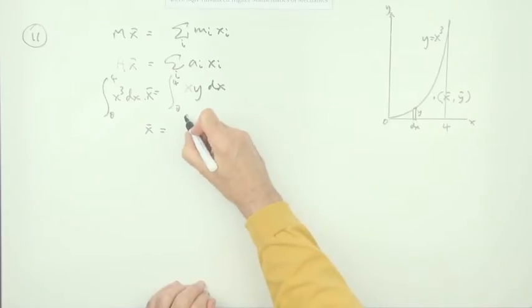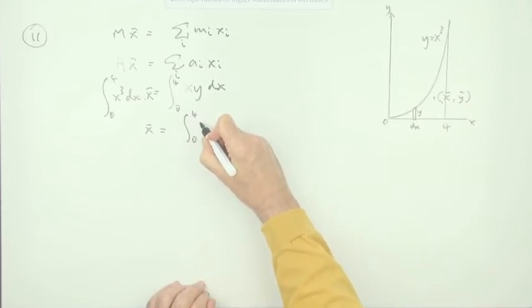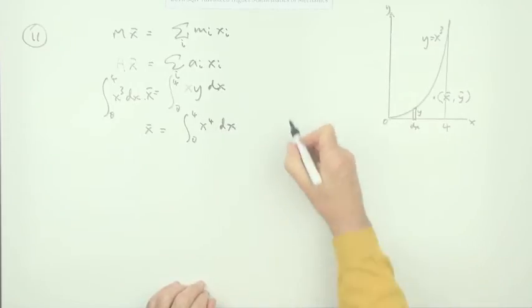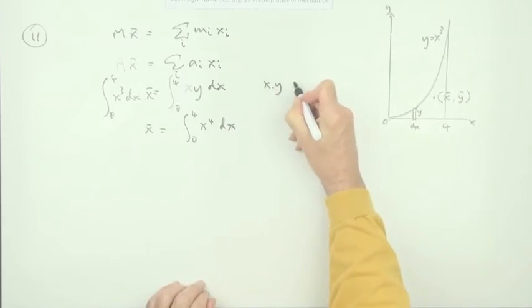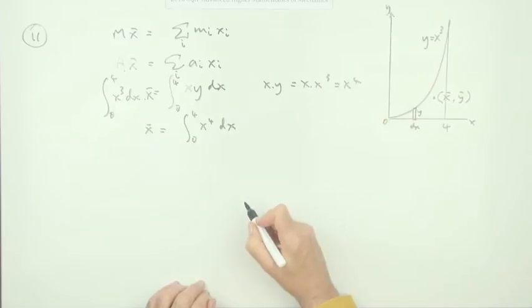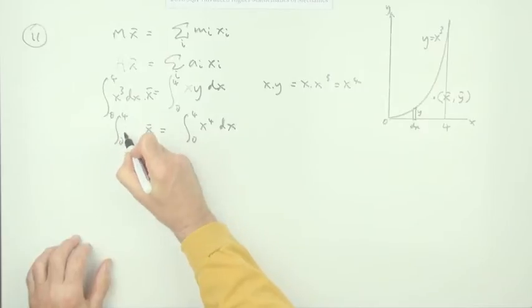So that's actually equal to from 0 to 4 of x to the power 4 dx. Maybe we'll put a note here. xy equals x times x cubed equals x to the 4.